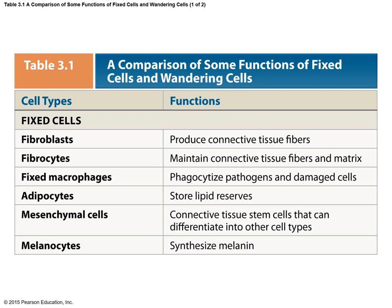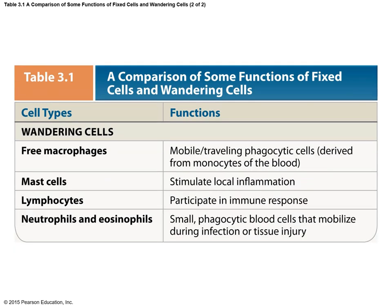This table gives a list of the fixed cells in connective tissue proper — for example, fixed macrophages, which are soldier cells that stay at one place. Adipocytes are the fat cells. Melanocytes are cells that contain melanin pigment and provide coloration to the skin or hair. This table lists the wandering cells, such as free macrophages that move around and perform immunosurveillance. Most of these cells are white blood cells involved in immunity.